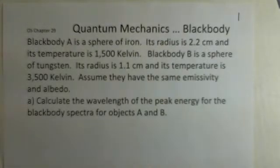Temperature of 1500 Kelvin. Blackbody B is a sphere of tungsten, radius of 1.1 centimeters, temperature of 3500 Kelvin. We'll ignore if I've gone past the melting point. Assume they have the same constants for calculating power for blackbodies.